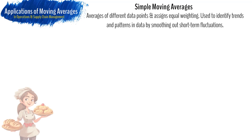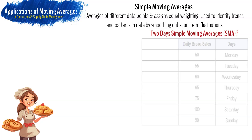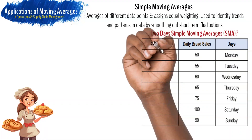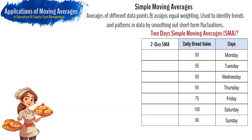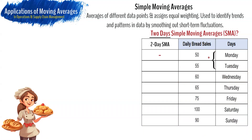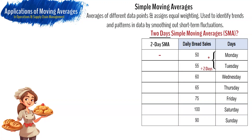To understand this, let's consider an example. A bakery owner wants to predict daily bread sales using a two-day simple moving average after recording their daily sales for the past week. The time series data they have gathered is illustrated in a table. The baker wants to identify changes in sales patterns and use this to forecast future sales. To calculate the two-day simple moving averages, we start by taking the average of the daily sales for the current day and the previous day — that is, two days. As there is no data for the day before Monday, we start our calculations from Tuesday, summing Monday and Tuesday sales and dividing by two.